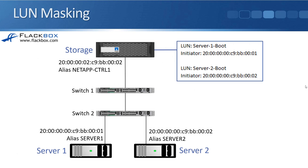Looking at the example, on the storage system I create a LUN for server1 — it's the boot LUN, so I've called it server1boot — and I specify that the initiator allowed to connect to that LUN is server1. Then I also create a LUN for server2, which is its boot LUN, and the only initiator allowed to connect to that is server2. So now I've configured both zoning and LUN masking.